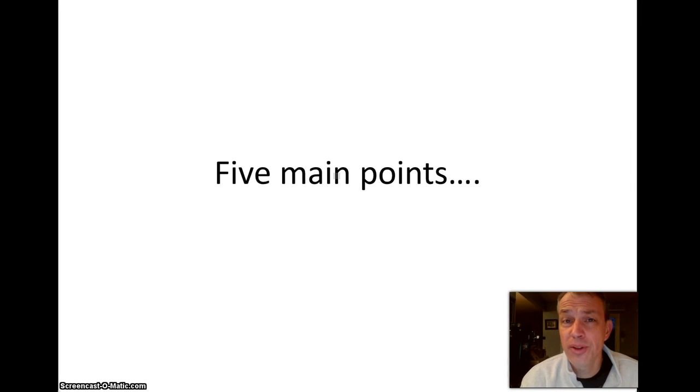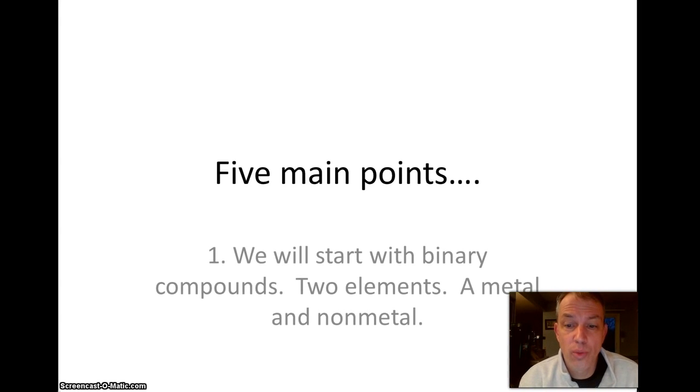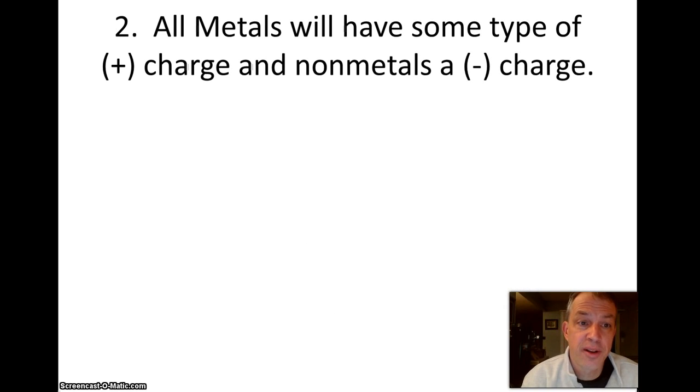Okay, so how do we do this? Well, there are really five main points. So first of all, number one, we will only start with the simplest compounds. They're called binary compounds, and that means binary means they only have two elements in them, a metal and a non-metal. Now, there might be a lot of metals and a lot of non-metals, but there only will be two specific elements in the compounds we'll be dealing with right now.